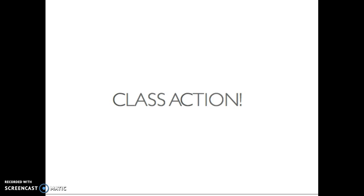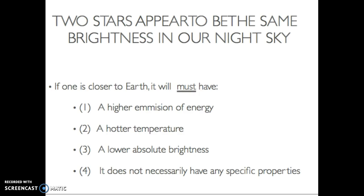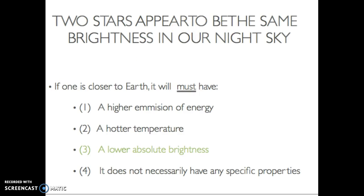Class action — let's see if you understand. Two stars appear to be the same brightness in our night sky. If one is closer to the Earth, it must have what? Pause the video now. Here's the answer: it's number three — if one is closer to the Earth, it must have a lower absolute brightness. The one that's closer must have the lower absolute brightness if they appear to be the same apparent brightness.